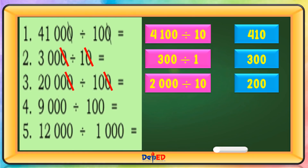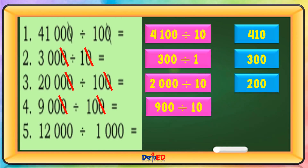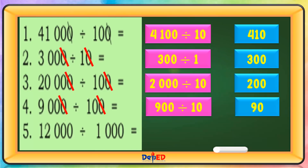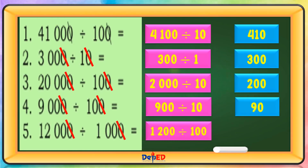Number 4: Let's cancel first. It will become 900 divided by 10 equals 90. Number 5: Let's cancel it first. It will become 1,200 divided by 100 equals 12.